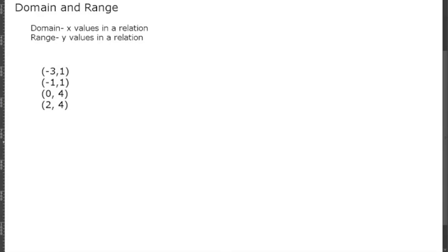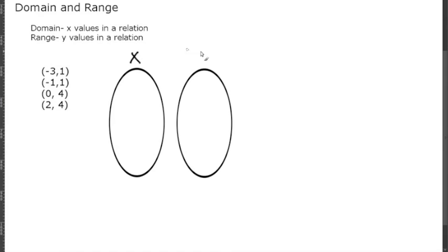(0,4), and (2,4), we will map these to each other. So we're going to write down our x values first: -3, -1, 0, 2. Our y values are